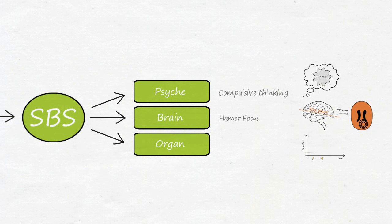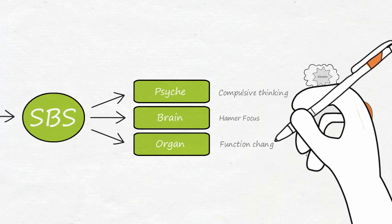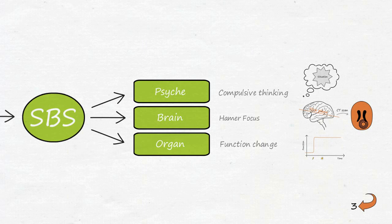Depending on the tissue type, there is an increase or decrease in the function of the associated organ, which leads to cell proliferation or cell loss given unbiologically long conflict times.